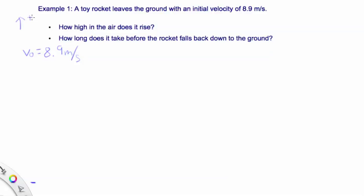We also know that when it reaches its peak, for that split second, the velocity will be zero — the final velocity at the peak. And because this object is on Earth, we know that there is acceleration due to gravity. Because the acceleration is downwards, we're going to say it's negative 9.8 meters per second squared. And we're asked to find its final displacement.